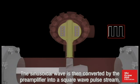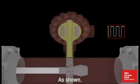The sinusoidal wave is then converted by the preamplifier into a square wave pulse stream, as shown.